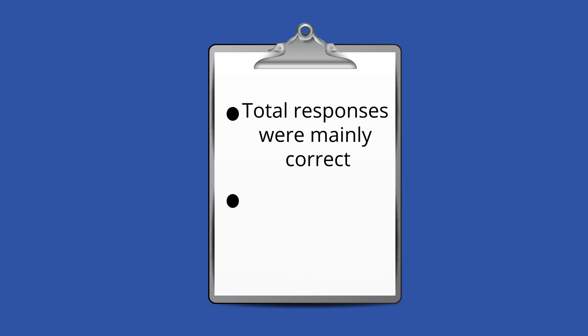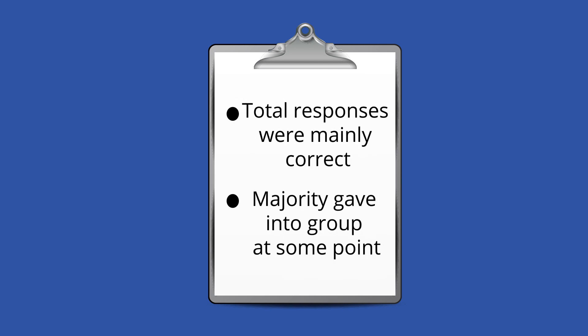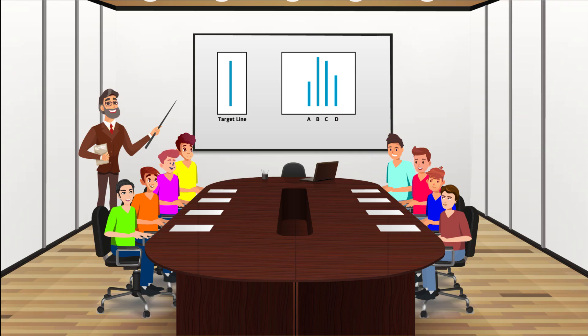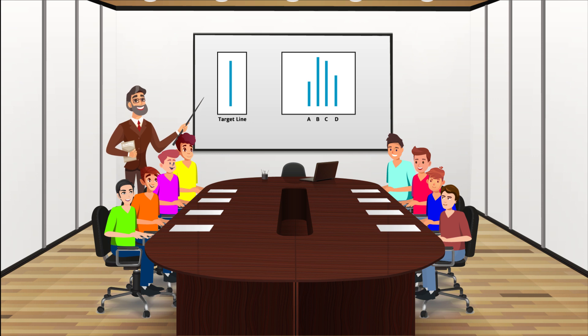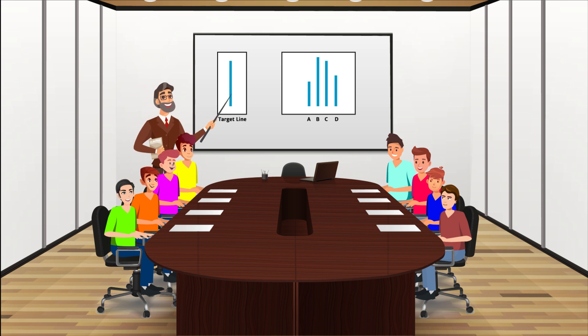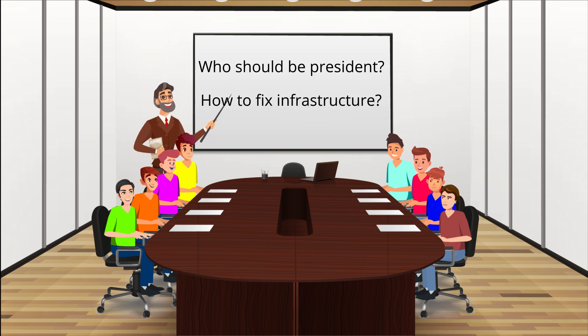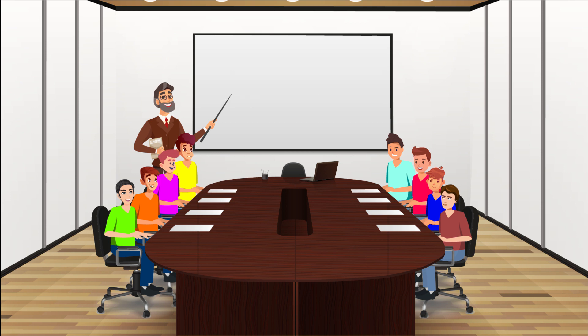Despite the fact that only a minority of the total responses were wrong, a majority of subjects gave in to group pressure at some point during the experiment. In these trials, participants could clearly see what the correct answer was, yet almost all of them felt uncomfortable, nervous, and doubtful about going against the group. Imagine how much harder it must be to go against the majority on a less clear-cut issue, like who to vote for in an election or how to solve infrastructure problems.